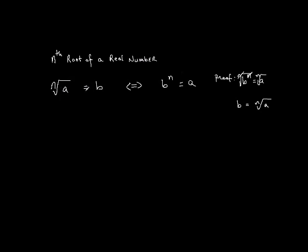So both sides of this, here on the left-hand side or on the right-hand side of the arrows, both sides are equivalent to each other. And so the nth root of a equals b means that b to the power of n is equal to a.